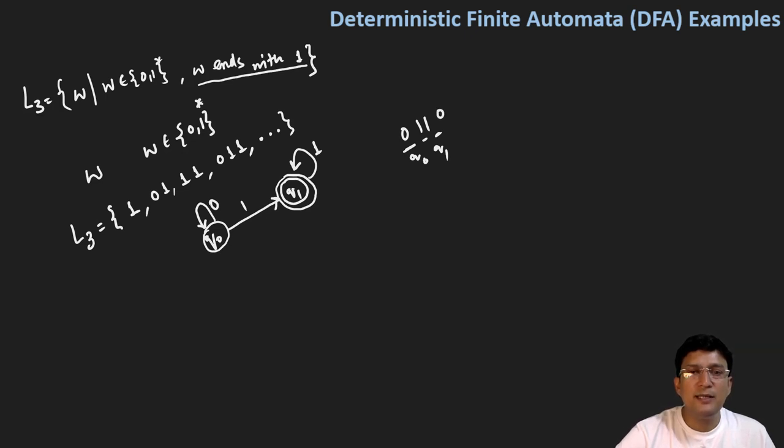But if the input is 0, then we will go back to q0 state. So here q0 state is non-final state, and q1 is final state.